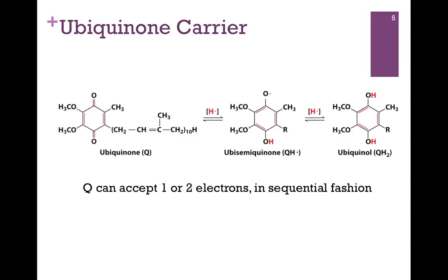We also have another carrier: ubiquinone, which we'll see more particularly when we get to Chapter 15. This carrier is unique in that it can carry either one or two electrons, and it does so in a sequential fashion. The ubiquinone molecule can pick up a hydrogen atom — a proton and an electron — to form a semiquinone, having picked up only one electron. Then it can pick up another proton and electron to become the fully reduced form, ubiquinol.